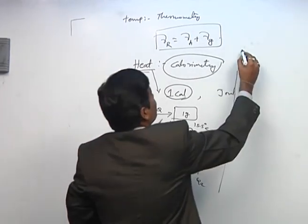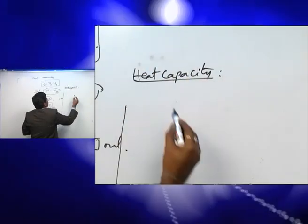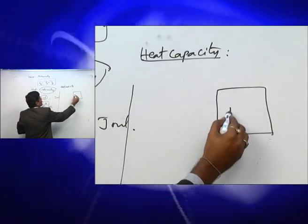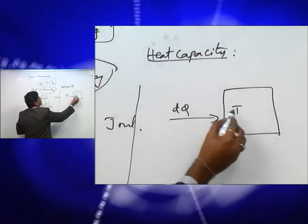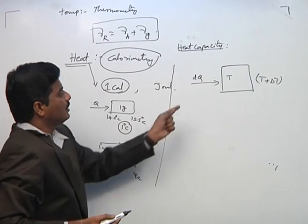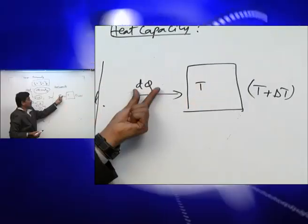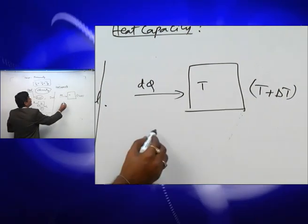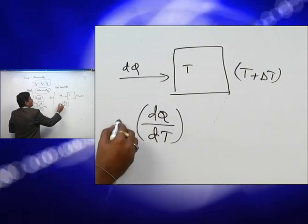Next, heat capacity. Suppose we have a material initially at temperature T. If heat DQ is supplied, its temperature increases to T plus delta T. The amount of heat supplied to the system that raises its temperature by DT is what we call heat capacity.